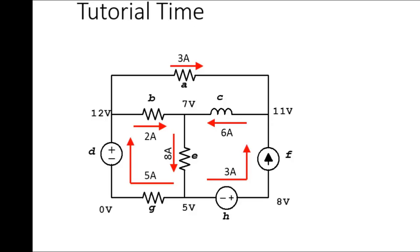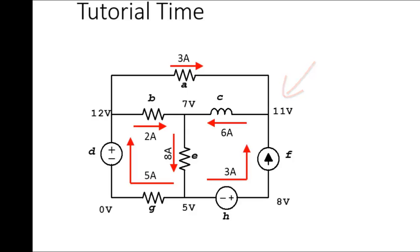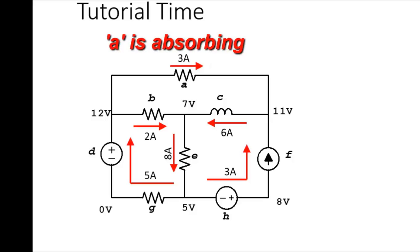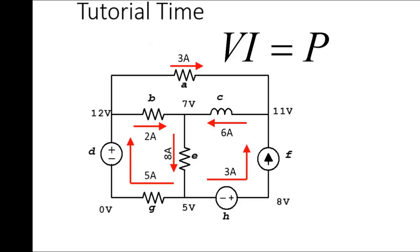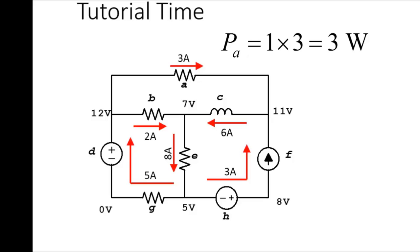Currents are given in every element. Never mind what those elements are — we are yet to formally introduce those symbols. We need to find the power in each element and determine if the element is absorbing or delivering power. Each element is identified with a letter. The left of A is 1 volt higher than the right of A. So the 3 amps current is flowing from a higher point to a lower point — coulombs arrive rich in element A and leave poor. Element A is absorbing power. How much? VIP: 1 volt times 3 amps — that is 3 watts.